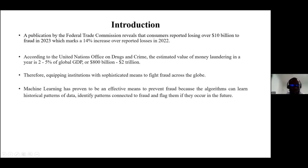According to the United Nations Office on Drug and Crime, the estimated value of money laundering in a year amounted to 2 to 5% of global GDP, which is $800 billion to $2 trillion USD. Given this compounding and rising nature of fraud across the globe, there is therefore the need for institutions and governmental agencies to adopt more sophisticated means to fight this increasing trend. Machine learning algorithms have proven to be an effective means to prevent fraud, as they can learn from historical patterns, identify patterns connected to fraud, and flag them if they reoccur in the future.